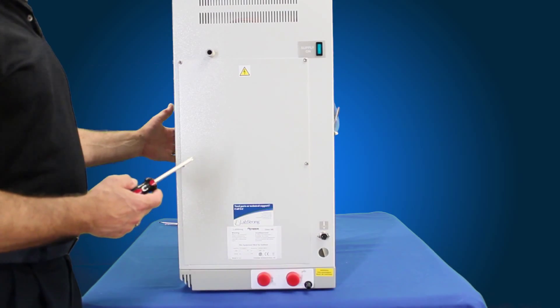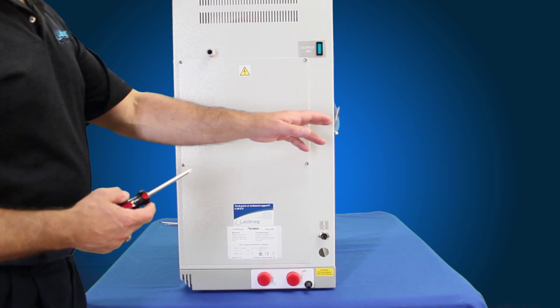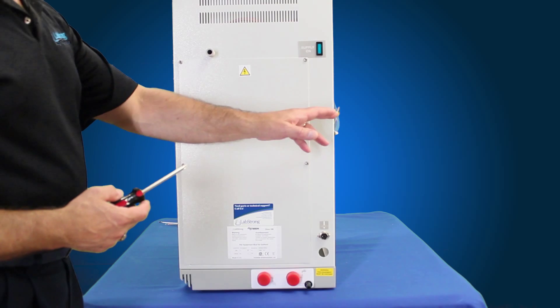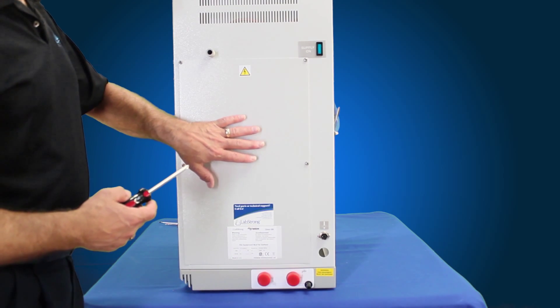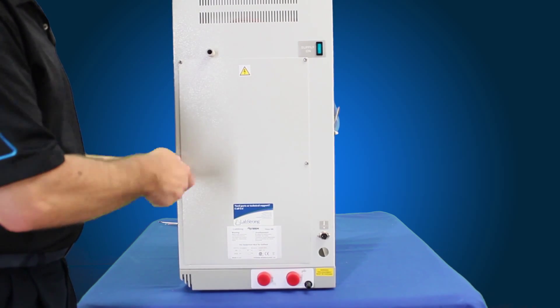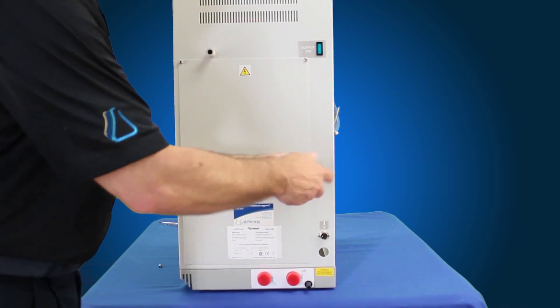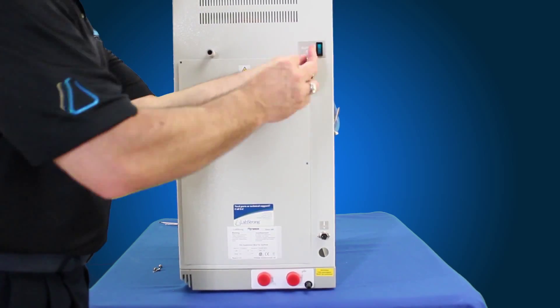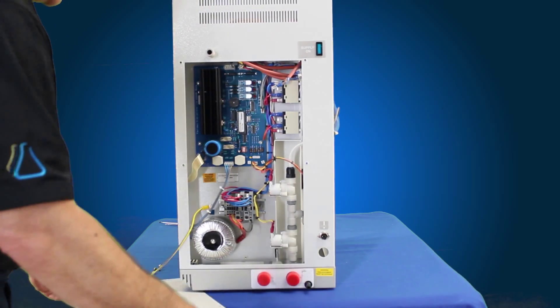We have the thermistor removed from the glass and the back of the unit removed. We've taken the wire ties off so that we can disassemble the cable from the back. But now we have to take it off the printed circuit board on the right hand side of the unit. So we're going to remove the right side panel.